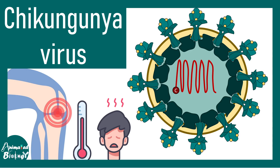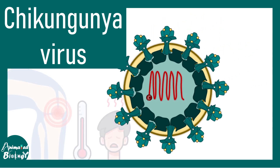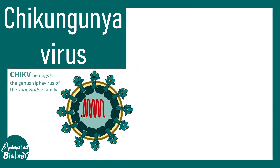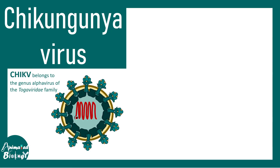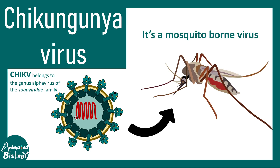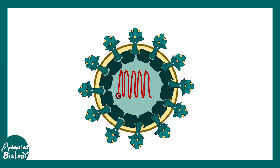In this short video we'll be talking about the Chikungunya virus. Chikungunya virus is basically a virus known as an alphavirus and it belongs to the Togaviridae family. It's a mosquito-borne virus, also known as arbovirus, which stands for arthropod-borne virus, and it is transmitted via Aedes aegypti.